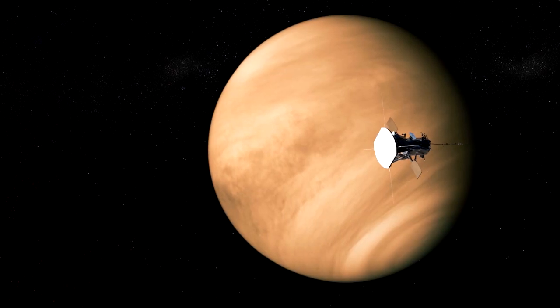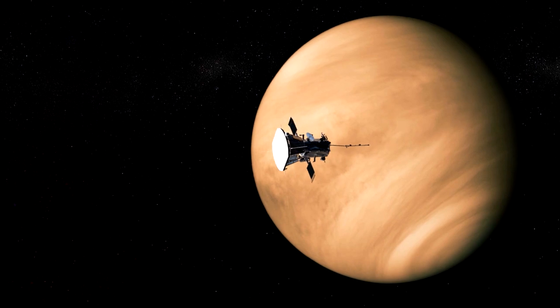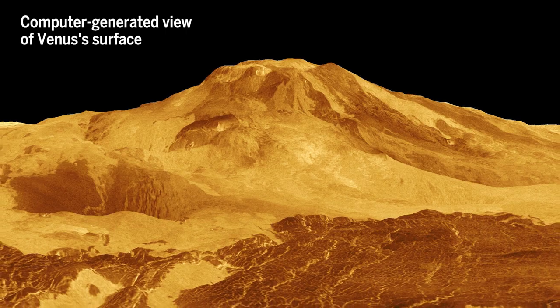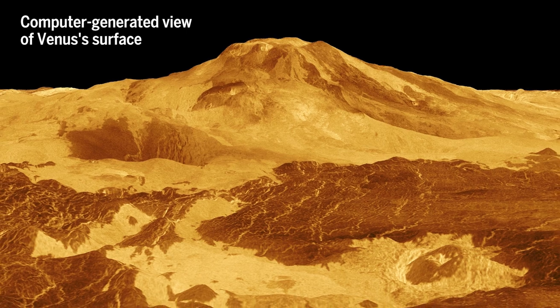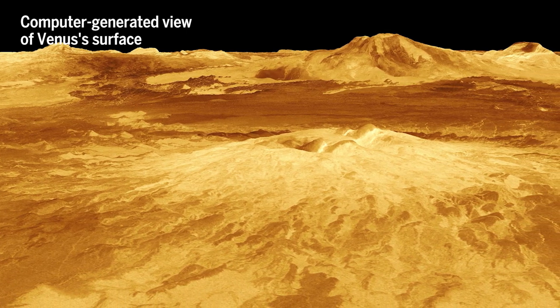But in recent years, measurements from orbit have detected spikes in volcanic gases, such as sulfur dioxide. And some volcanoes thought to be dormant have been found to be abnormally warm. Signs that Venus might not be as inactive as we thought.